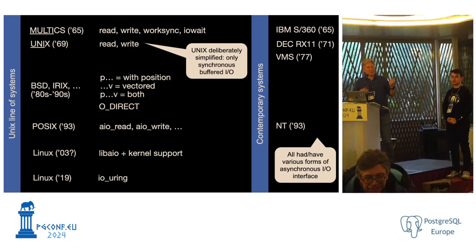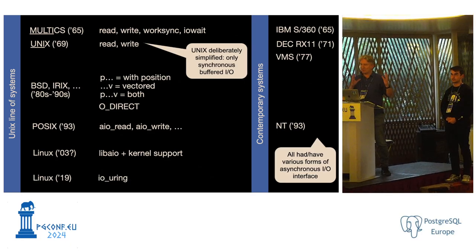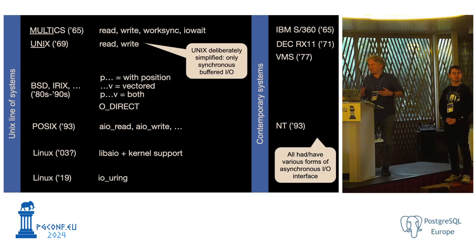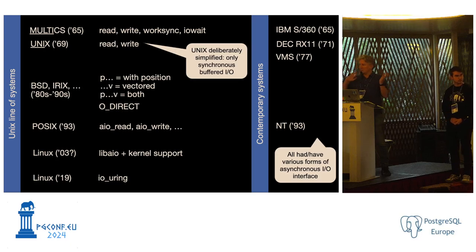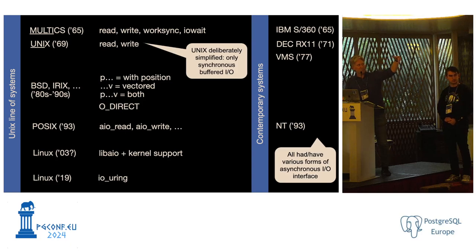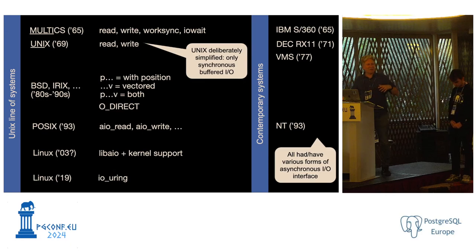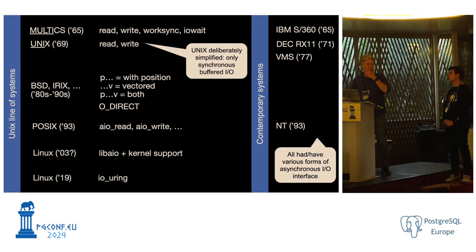The Unix guys, Dennis Ritchie and Ken Thompson, were making something very, very simple — the Uniplexing Computing System, which is one explanation for the name of Unix. They said almost all applications just want synchronous buffered.io, so they threw away all the rest of the complexity because it was pretty complex and hard to program with, especially in a programming language from the 1960s. Later on, there've been various extensions to that — pread, the vectored version, and so on. Direct.io was a de facto standard that came along in the late 80s from SGI. POSIX did standardize asynchronous.io in the 90s, but most implementations were terrible and it never really caught on.